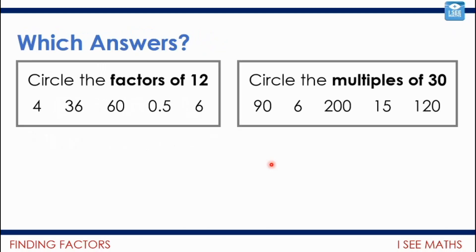Okay, so have a look at this one. Which answers? So of this list, circle the factors of 12. And of this list, circle the multiples of 30. See if you can spot the ways I've tried to trick you there. Pause the video.